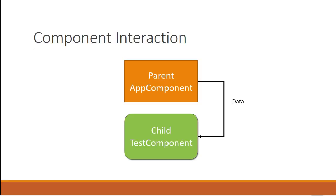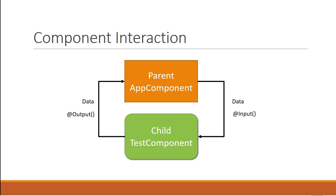The parent component might send some data to the child component, and the child component might also send some data back to the parent component. The answer to how components interact is using input and output decorators. Using the input decorator the child can accept input from the parent, and using the output decorator the child will send out events to the parent.